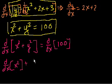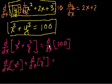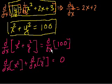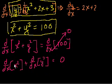So we get 2x plus the derivative with respect to x of y squared equals 0. Now this term is where you might get a little confused — I am taking the derivative of y squared with respect to x.